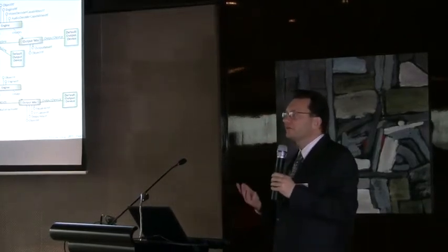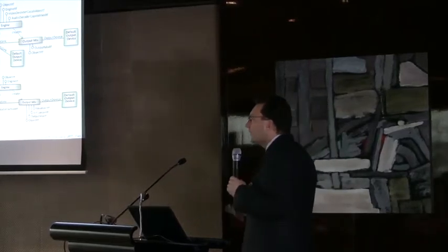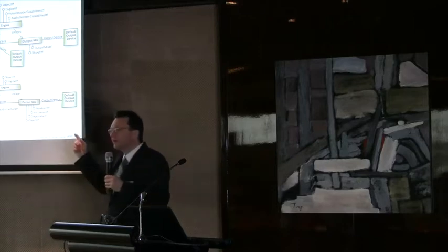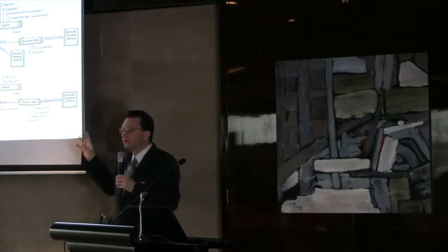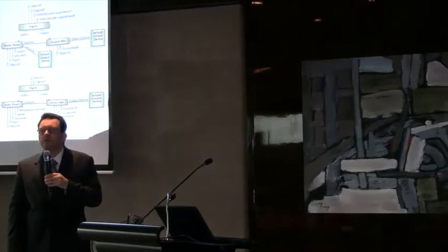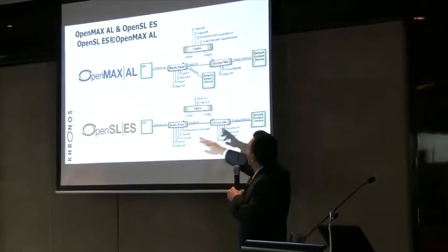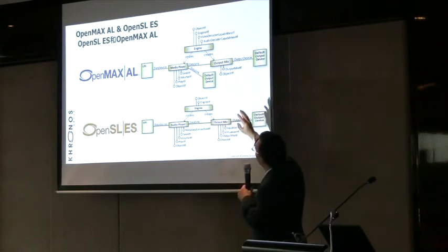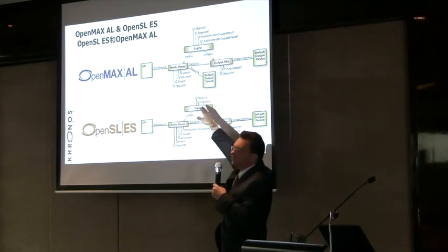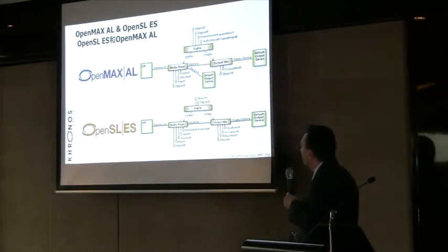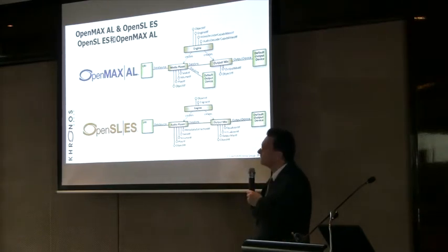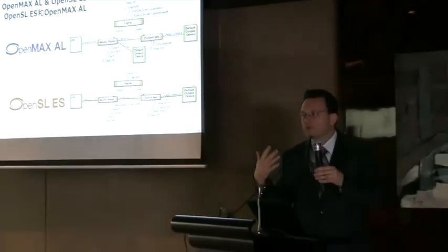OpenMAX AL and OpenSL ES were designed with a common architecture so it's easy for application developers to use the functionality of one, the other, or the two combined. As you can see in the API design graphs, for building an application to play audio, you specify the URI using either OpenMAX AL or OpenSL ES, specify the player object and output mix — which has varying kinds of controls depending on whether it's AL or SL ES — and then the output device. You create your engine object, and you have your interfaces for metadata, seek, volume, and equalizer virtualization, giving you full control of playback.